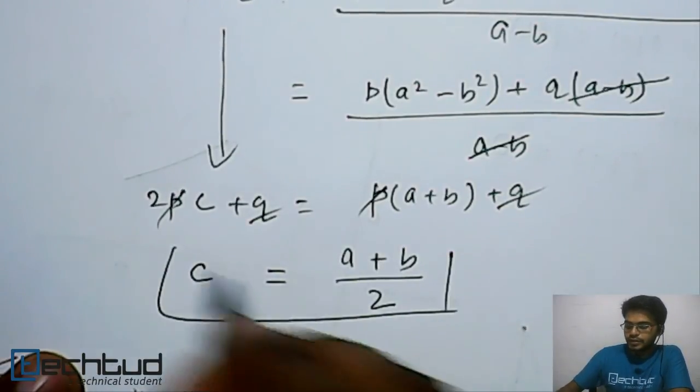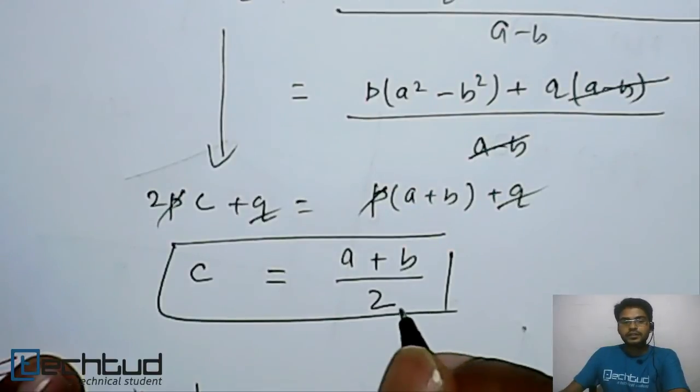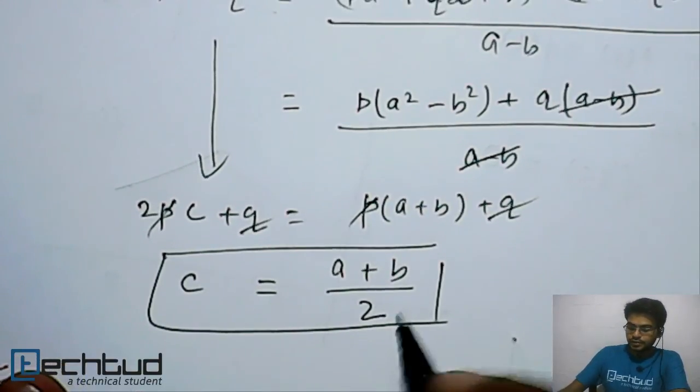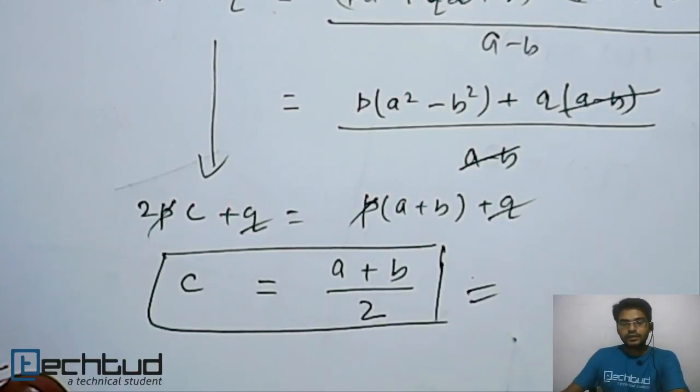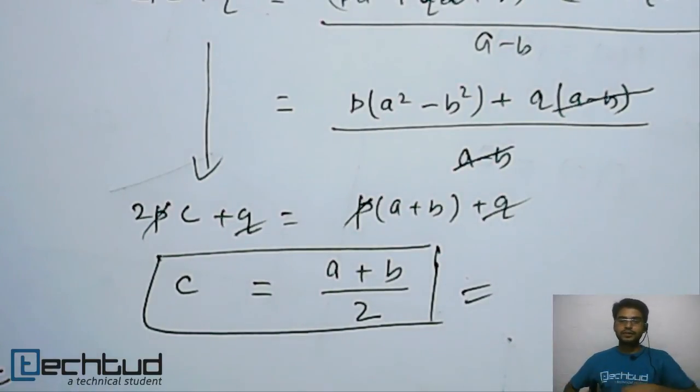So now we have point c where the Lagrange theorem will be satisfied. This is the value of c. Likewise, you can go for calculating or solving the problems, similar problems using Lagrange mean value theorem. I hope this is clear. Thanks for watching.